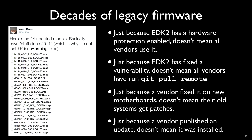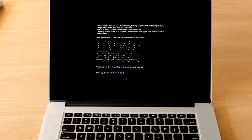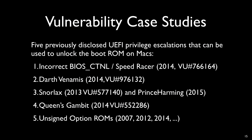This is an area where Apple has actually really excelled — they are actively pushing firmware updates for systems going back almost 10 years when firmware security vulnerabilities are disclosed to them. Thunderstrike 2 is built on five previously disclosed, multi-year-old firmware vulnerabilities. All the details have been published going back to 2014, 2013, and some as early as 2007.